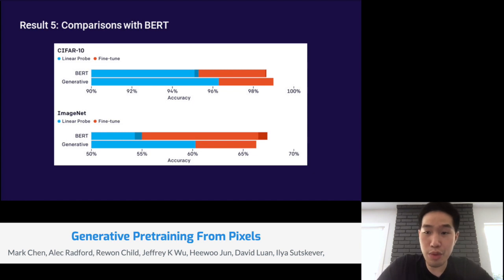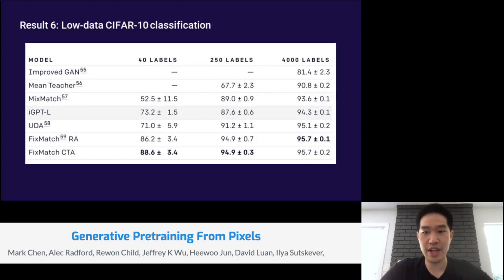My next result is comparisons with BERT. Because masked language models like BERT have outperformed generative models on most language tasks, we also would like to see how the BERT objective compares in image models. So instead of predicting the next pixel, like I described earlier, we're masking out 15% of the pixels and asking our model to recover those. We find that the linear probe performance is significantly worse for BERT models. BERT models actually excel after fine tuning. We see that a spatially permutation invariant BERT model achieves close to 99% on CIFAR-10 and close to 70% on ImageNet at 32 by 32 resolution.